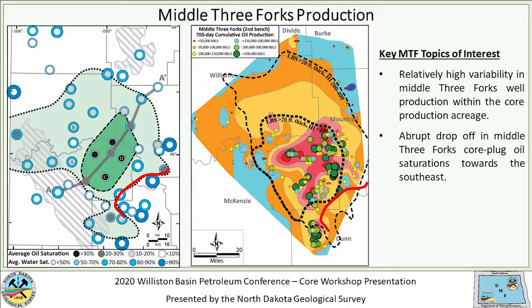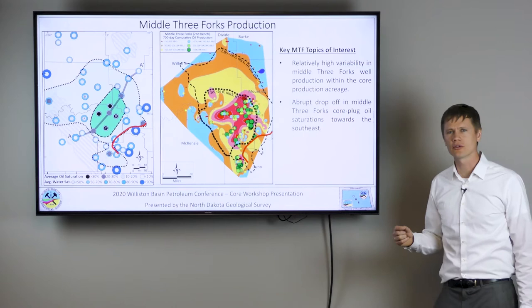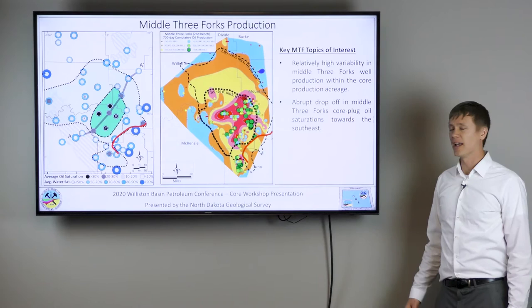Another observation is an abrupt drop-off going from high oil saturations in dark green, through intermediate oil saturations in light green, to suddenly minimal to negligible oil saturations in middle Three Forks cores with relatively high water on crossing a specific line. That red line may represent a limit of prospectiveness for middle Three Forks production. Transposing it onto the water cut production map, beyond that red line there haven't been any horizontal wells drilled and completed in the unit by industry — a point we'll revisit at the end of the presentation.